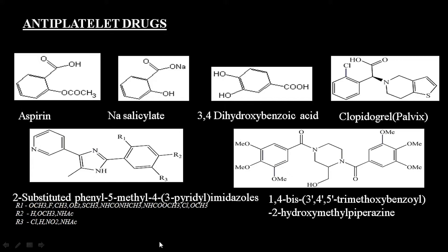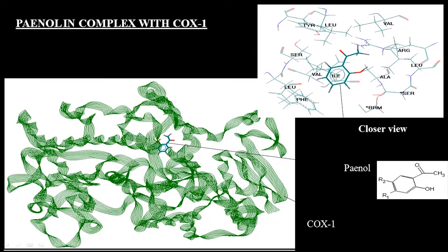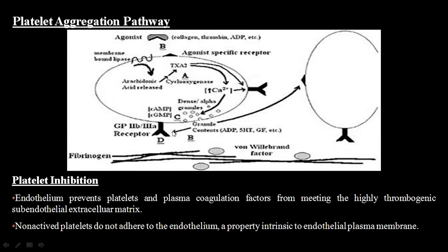We have also looked at some compounds called Pianols. They are almost like aspirin, and with R1 and R2 positions we can put many substitutions and get a huge number of derivatives. We can look at the anti-platelet activity of these. COX-1 is the enzyme known to be involved in platelet aggregation, as you can see in the pathway here.